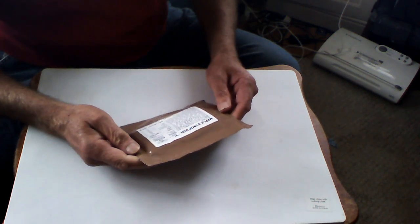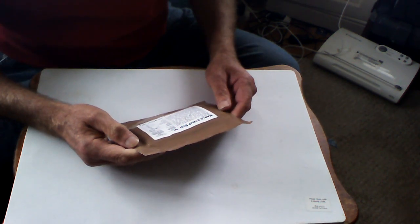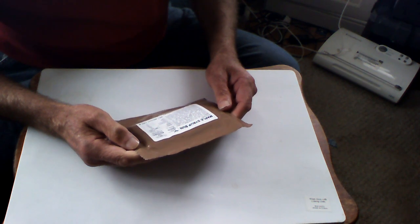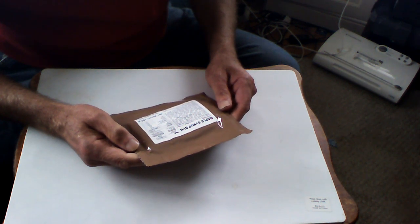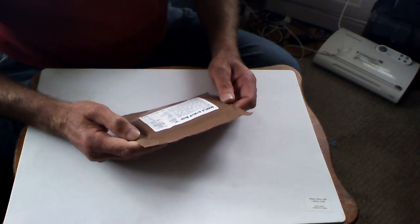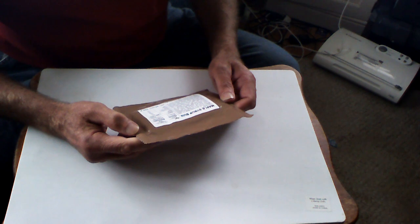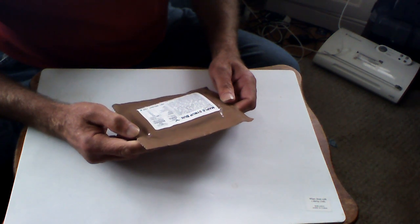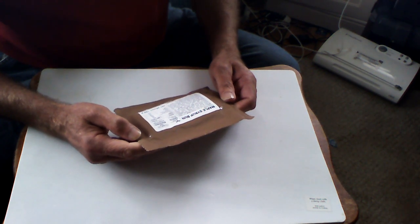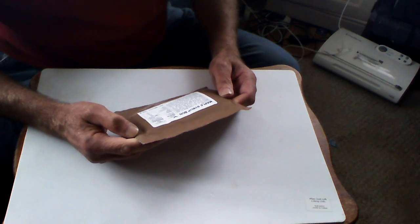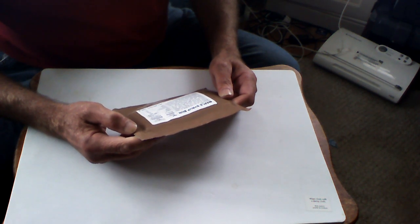This is the maple syrup bun by Bridgeford Foods. Best by 23 October 2020. This has 100 grams. It has all these weird numbers on it here. You can pause to get that information.